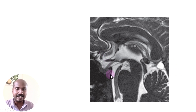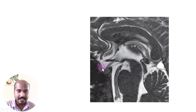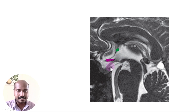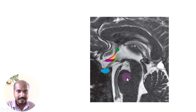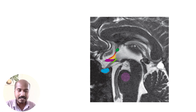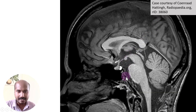Now let us identify these structures on a T2-weighted MRI image. CSF appears white in T2 weighting — you can see CSF inside the ventricular system as well as in the cisterns. We first identify the corpus callosum with its rostrum ending at the anterior commissure. Next is the optic chiasma, then the lamina terminalis. You can identify the pituitary gland, and above it the optic chiasma. The CSF-filled third ventricle creates two recesses — the supraoptic and infundibular recesses.